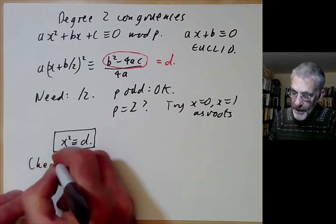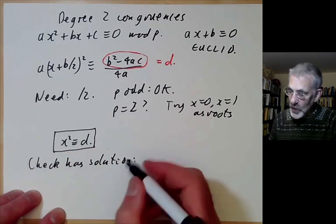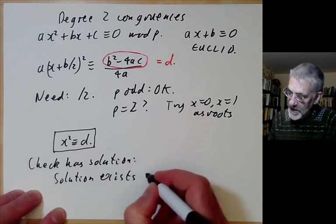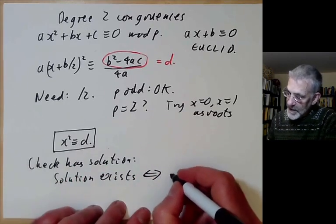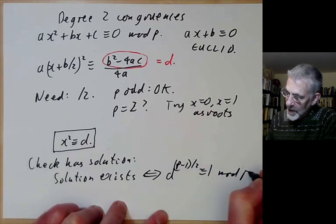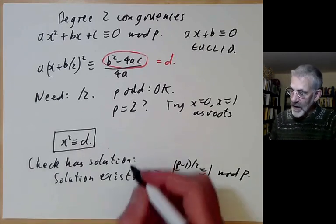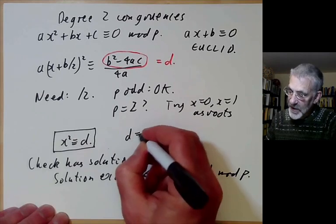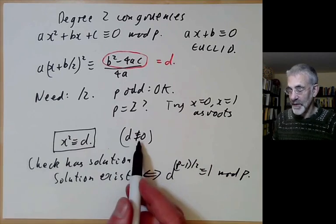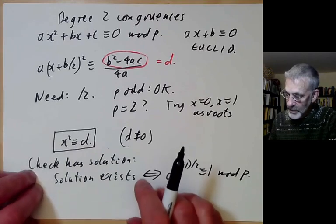We should check that a solution exists before actually finding it. By Euler's criterion, a solution exists provided d^((p-1)/2) ≡ 1 mod p. We're taking d to be not congruent to 0, because otherwise this doesn't apply — if d ≡ 0 and you can't figure out its square root, then you've really got problems.